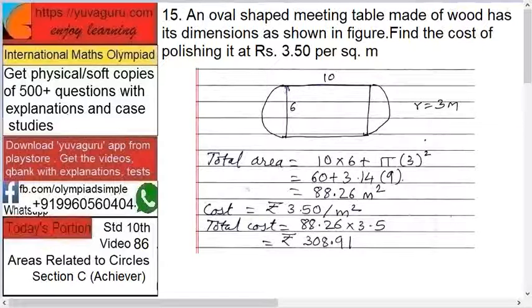An oval-shaped meeting table made of wood has its dimensions as shown in the figure. Find the cost of polishing it at a rate of 3.5 per square meter. So here, what are the dimensions? 10 and 6.